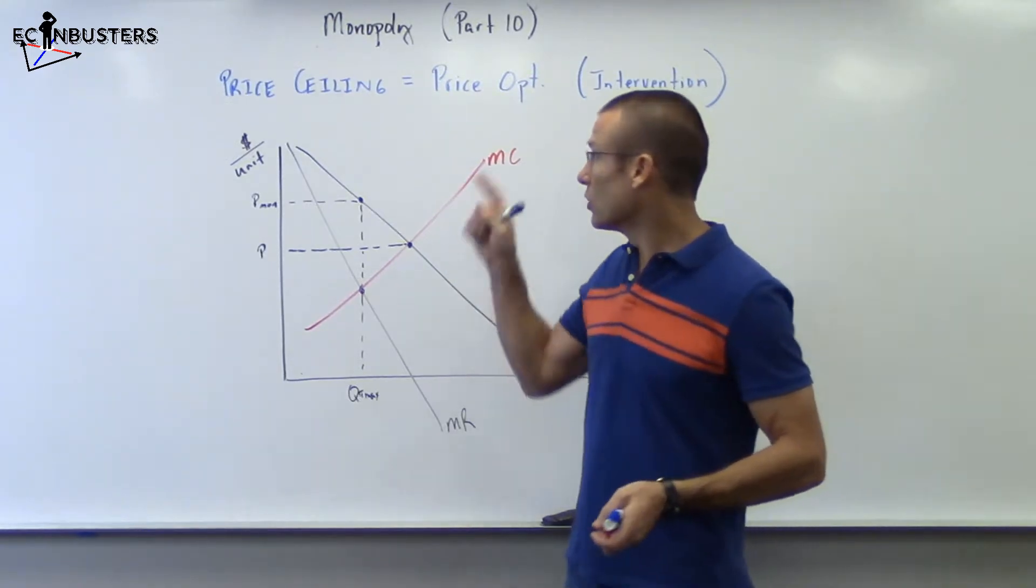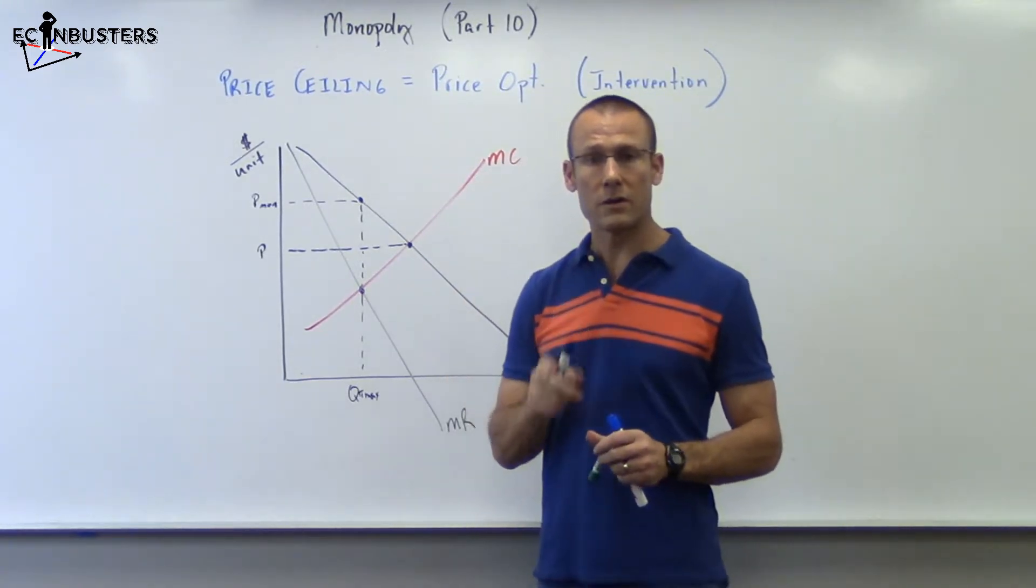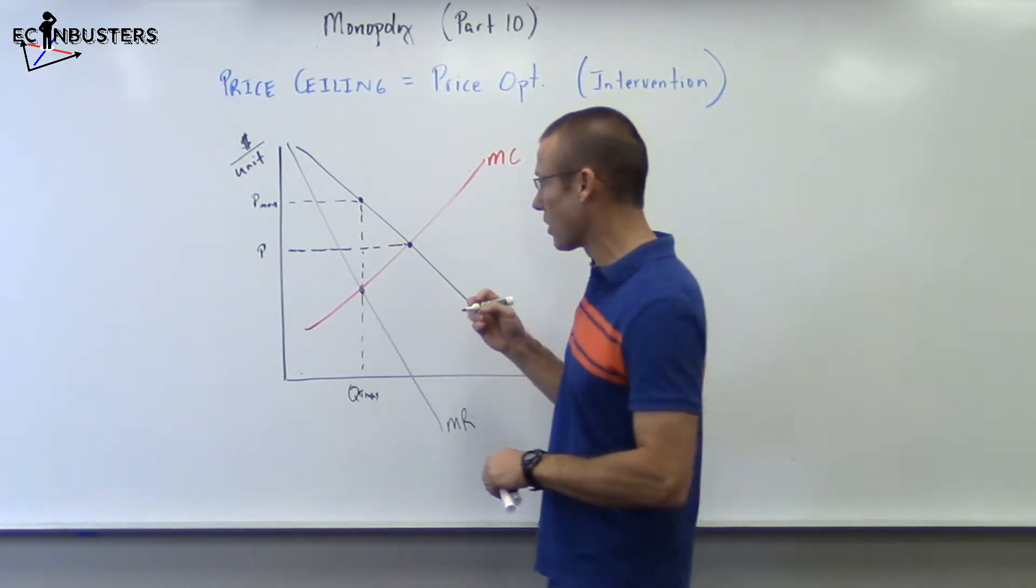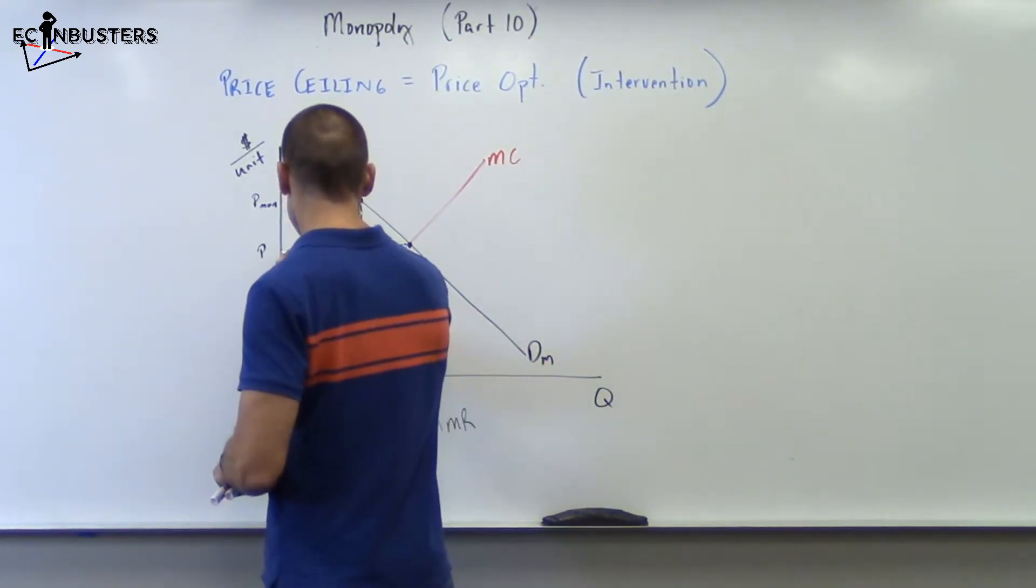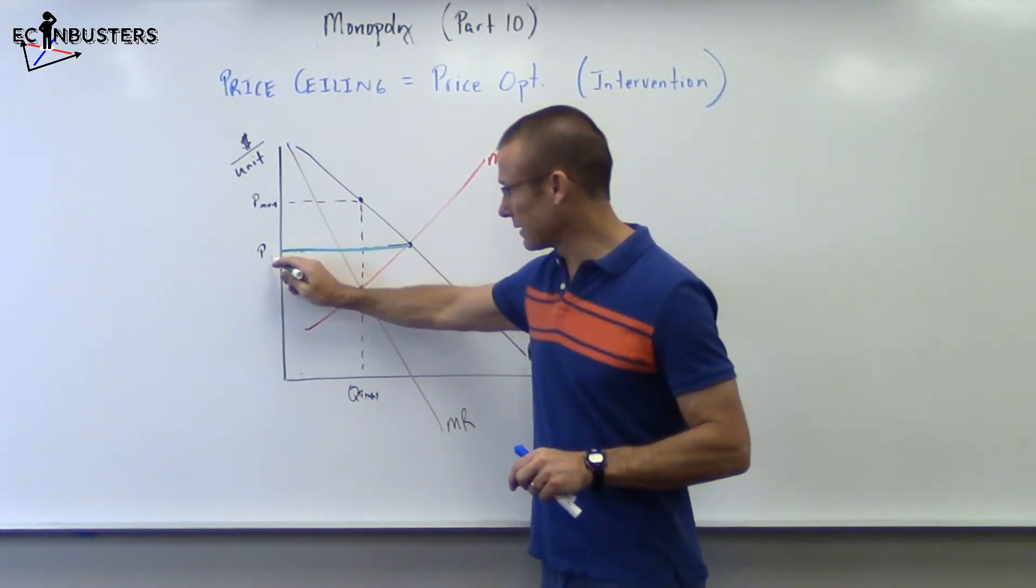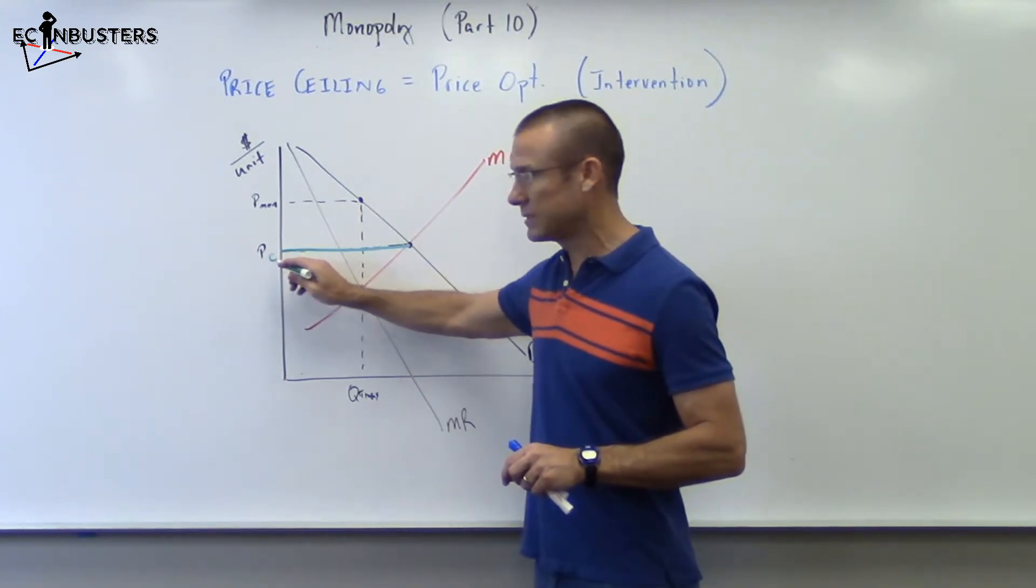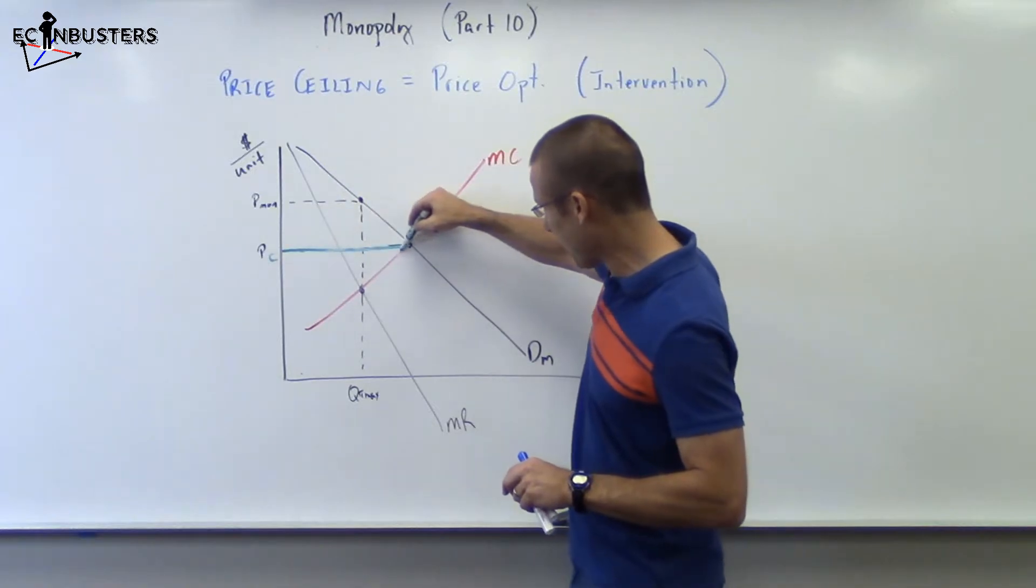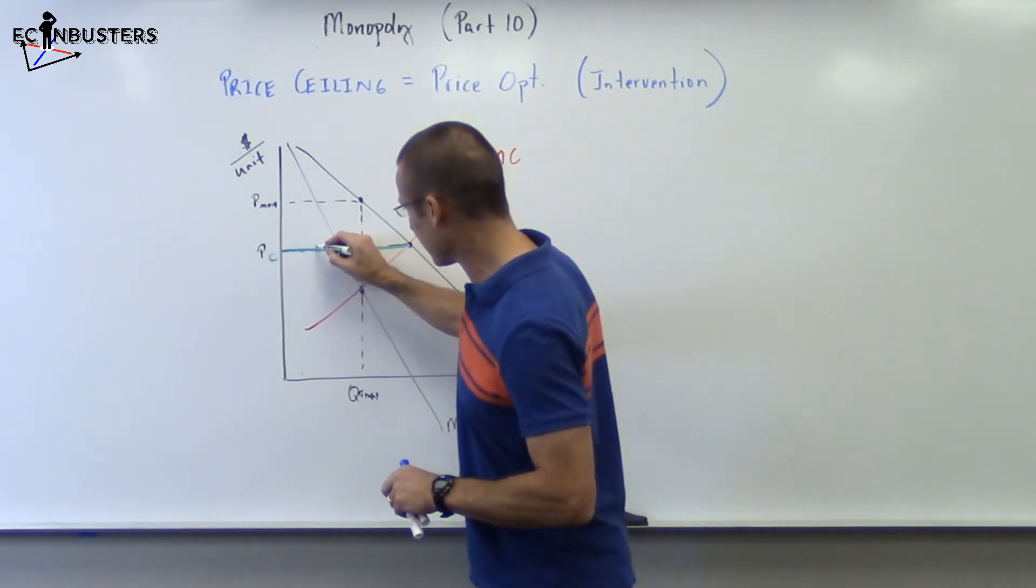Using our information from part nine, guess what? The price ceiling is now the MR curve. The price ceiling is now the MR curve up to the demand curve. So the price ceiling that's right there, that's not PC for P consumer, that's PC for price ceiling. It's now the MR curve to the demand curve. So I'm going to put MR, MR.